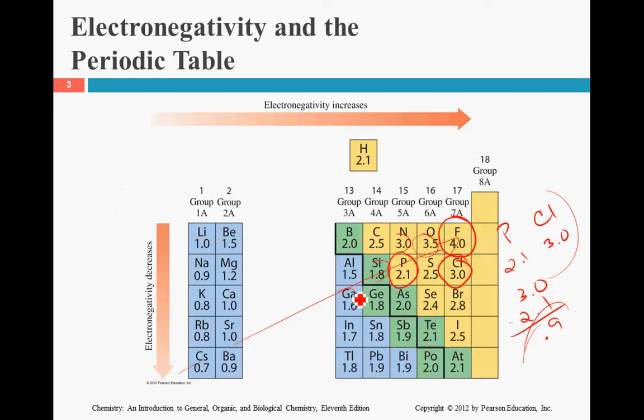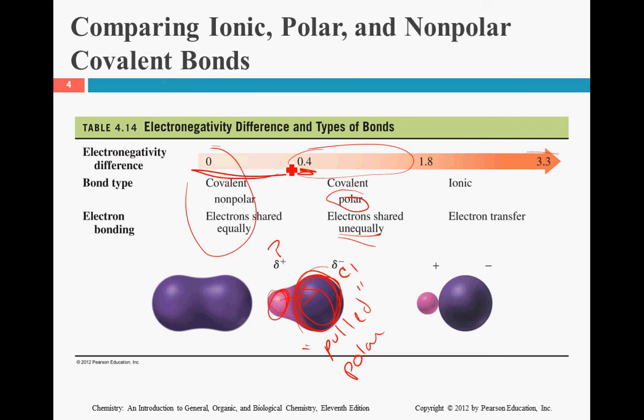Or as if we compare, like, bromine and iodine, 2.8 for bromine, iodine is 2.5. There's a difference of 0.3 there. That is under 0.4. So that means those electrons are going to be shared. There is no side bigger than the other. And then we have the absolute extreme over here. Anything bigger than 1.8 is considered ionic. That means that one atom completely has that electron. The other atom does not have any electron whatsoever. That, well, it has electrons, but it doesn't have the one that it just gave up. So if we're looking up here, where the electrons were pulled over, think of it as it got pulled so much that it got taken away.